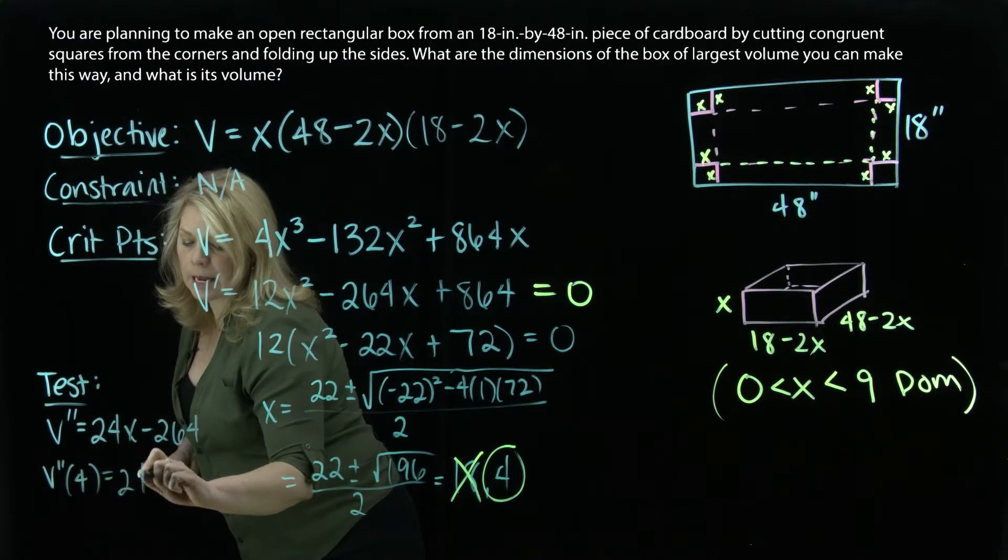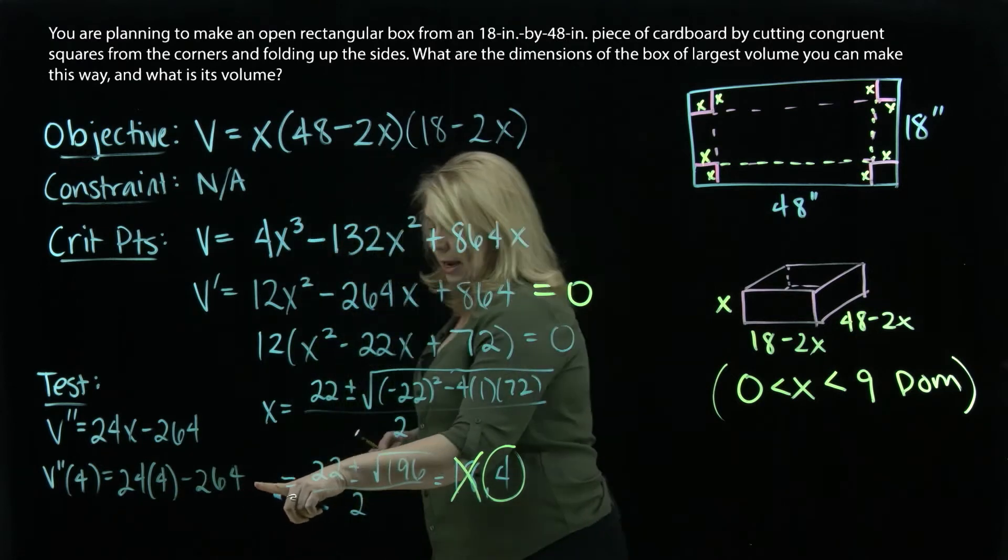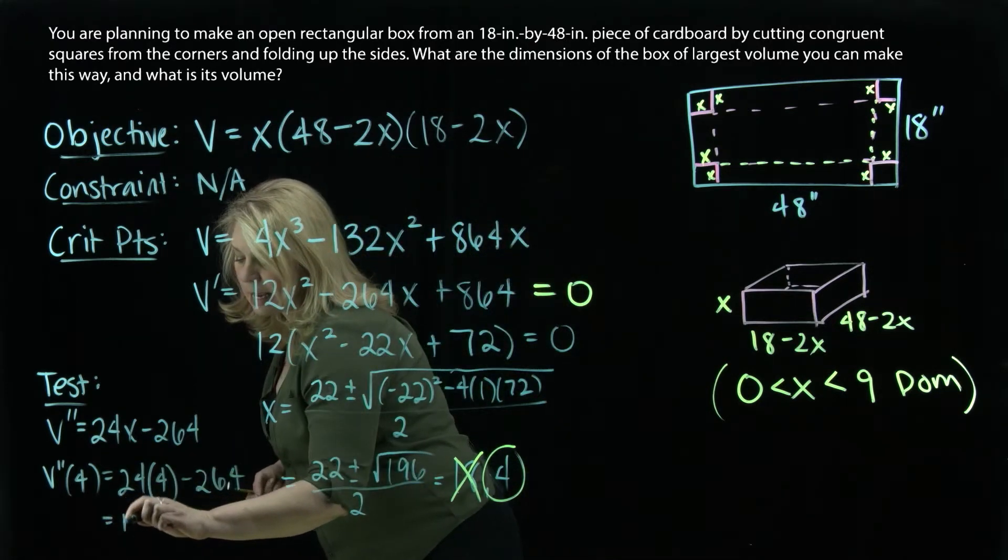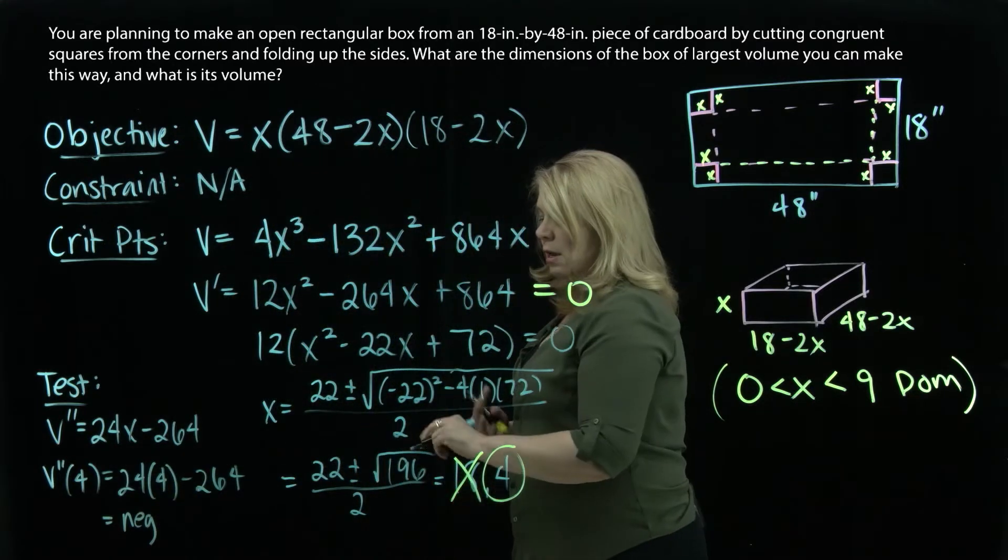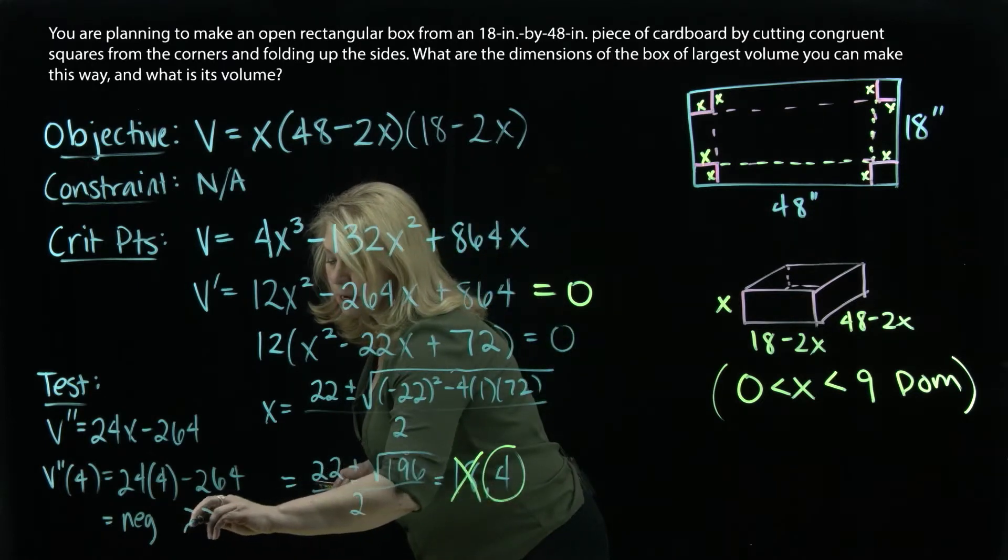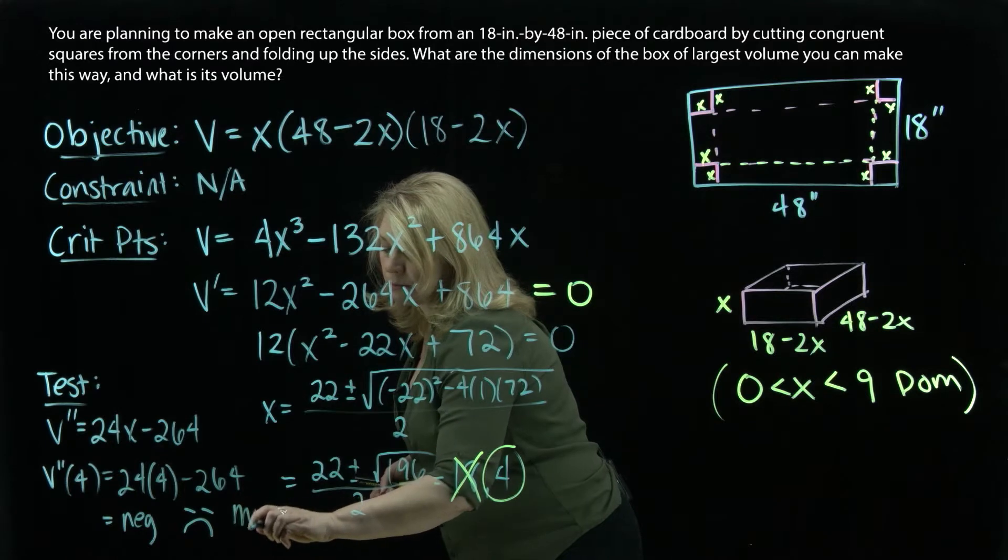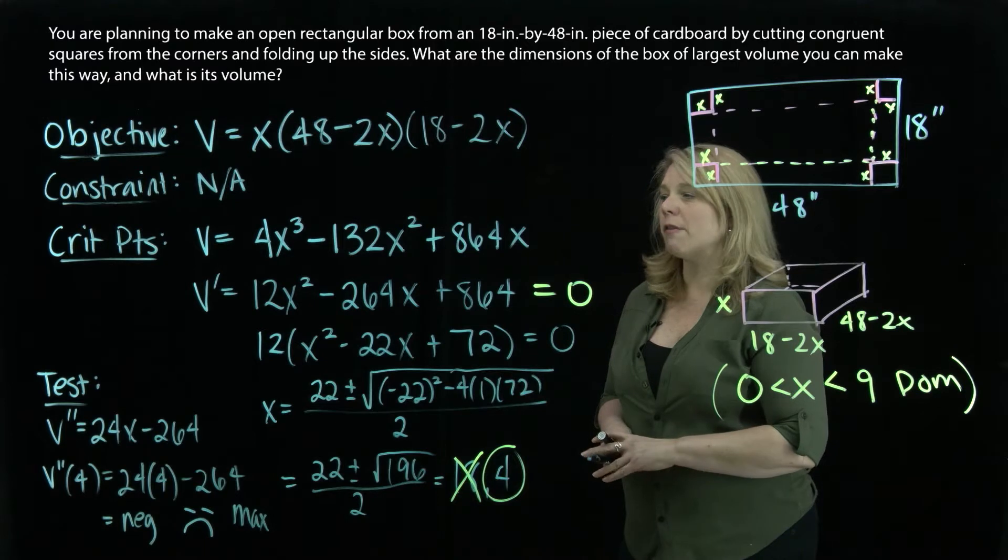And I don't really care so much about the value of this answer. I care about the sign of this answer. So when I simplify all this, I get a negative value for that second derivative when x equals 4, which tells me that at that critical point, the function is concave down. So we do have a local maximum at that point. So that really is a maximum that maximizes the volume of the function.